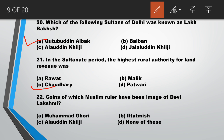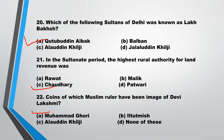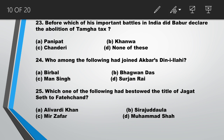Question number 22: coins of which Muslim ruler have the image of Devi Lakshmi? Answer is A, Mahmud Ghori. Question number 23: before which of his important battles in India did Babur declare the abolition of Tamgha tax? Answer is B, Khanwa. Question number 24: who among the following had joined Akbar's Din-e-Ilahi? Answer is A, Birbal.